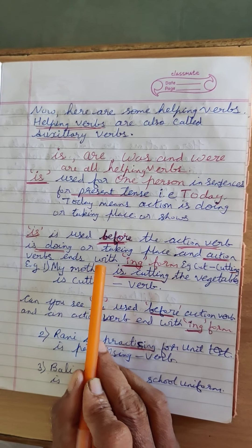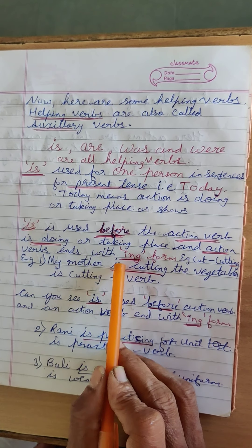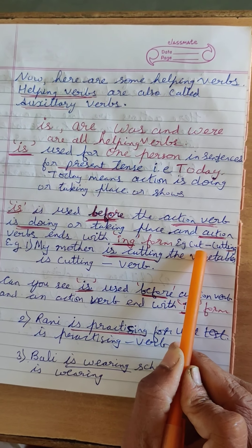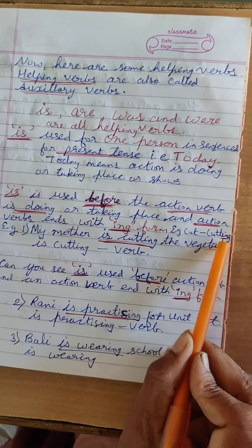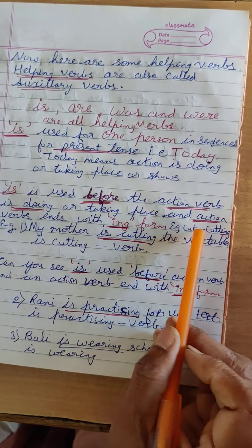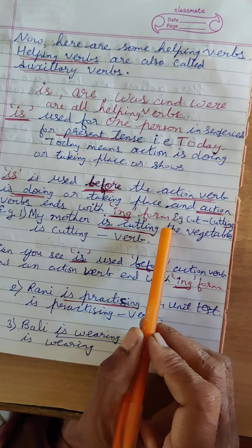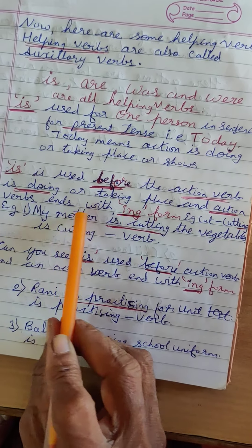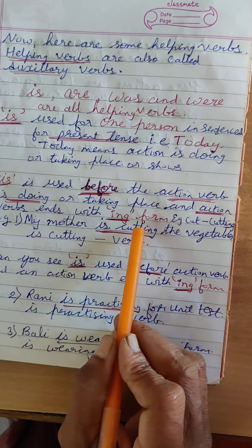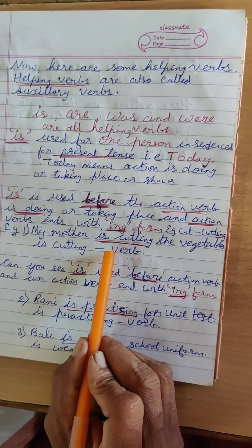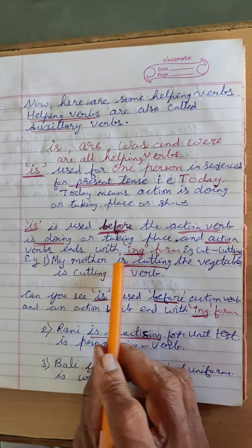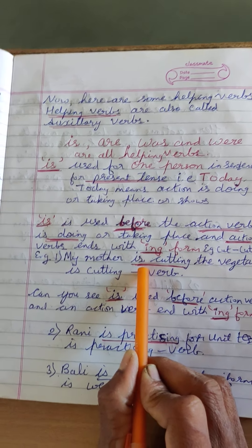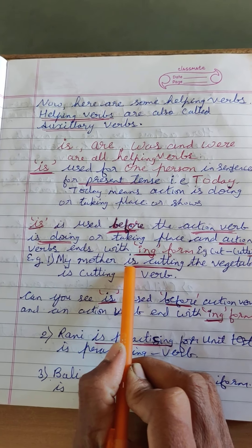So it will be the action verb, and verbs end with the -ing form. Example: cut. Cut is a verb, it is an action. Now, adding -ing, I have added -ting. So when you add -ing to the verb form, then it becomes 'is cutting'. So 'is cutting' are called helping verbs. Verb endings with the -ing form are used with the helping verb. You have to write is or are, and is is used for one person.